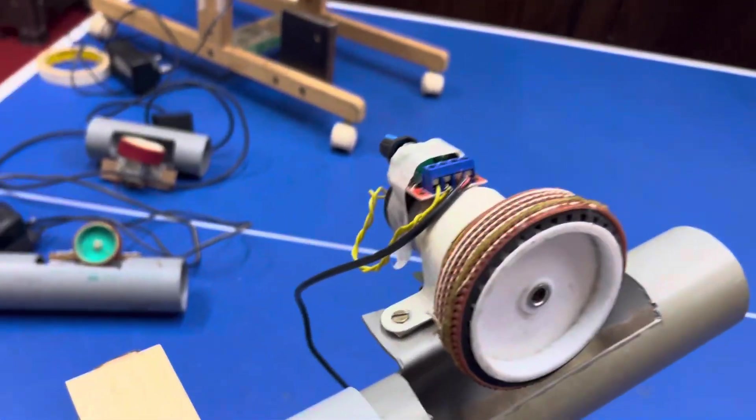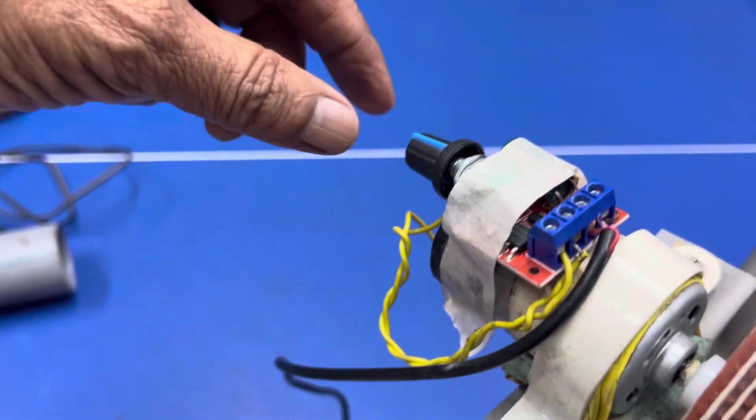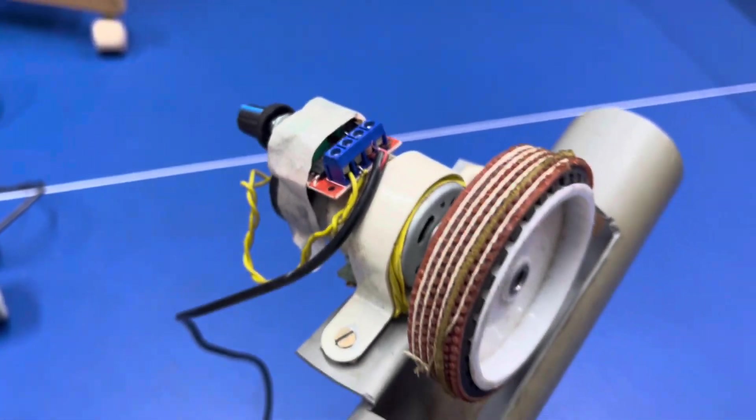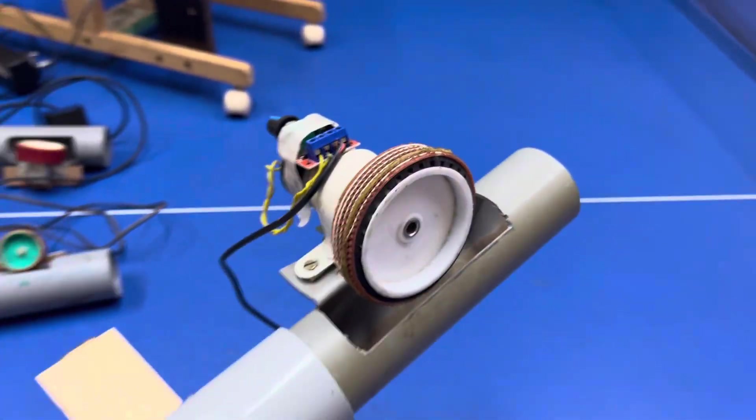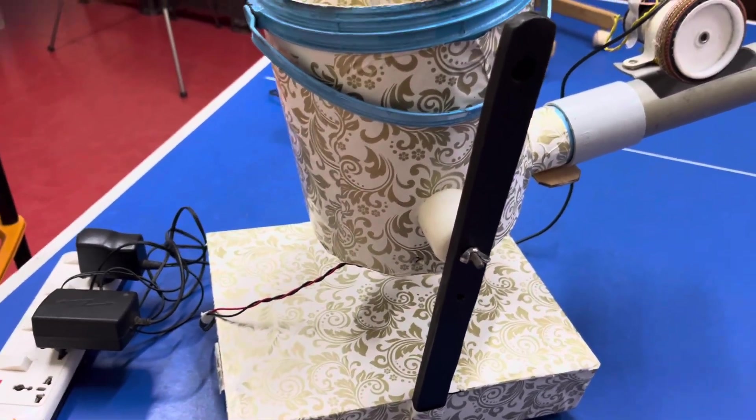And then this is a high speed motor with a regulator also fixed on that. You can increase or decrease the speed of the ball. You can increase or decrease the speed of the throwing of the ball over here. Nice one. Cute one. Very light.